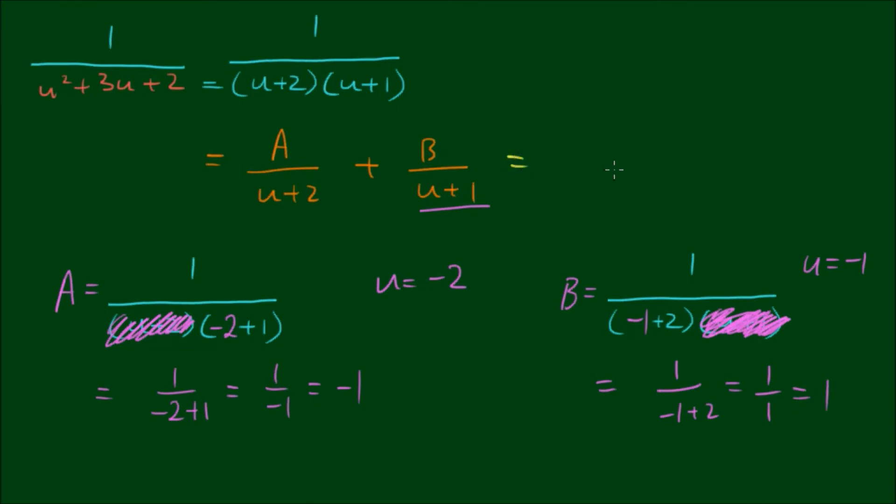So therefore we have negative 1 on u plus 2 plus 1 on u plus 1. So if we rewrite the integral again, the integral of du on u squared plus 3u plus 1 is equal to the integral of 1 on u plus 1 minus 1 on u plus 2.